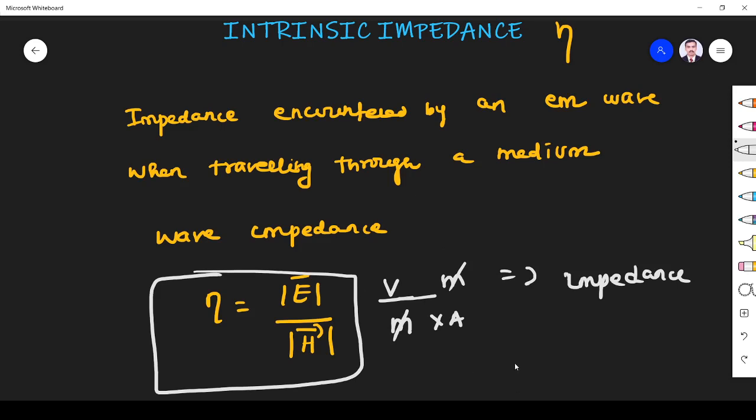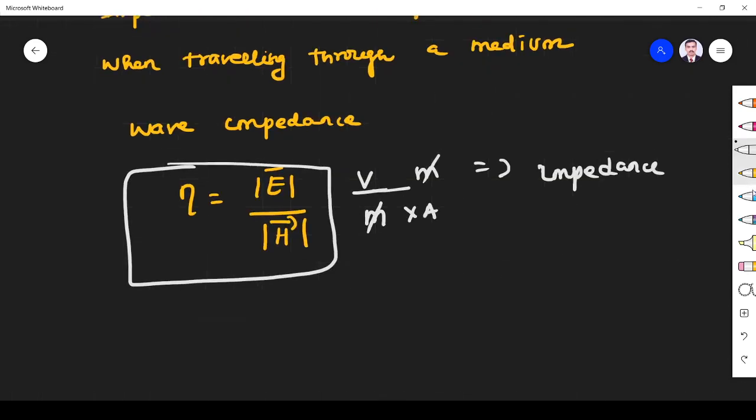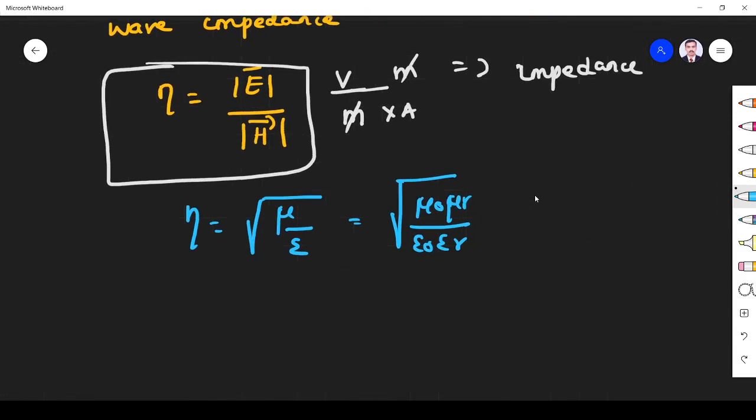If you know permeability and permittivity, the intrinsic impedance in terms of that is given by eta equals square root of mu by epsilon, where mu equals mu naught mu r and epsilon equals epsilon naught epsilon r. This is the intrinsic impedance of any medium.